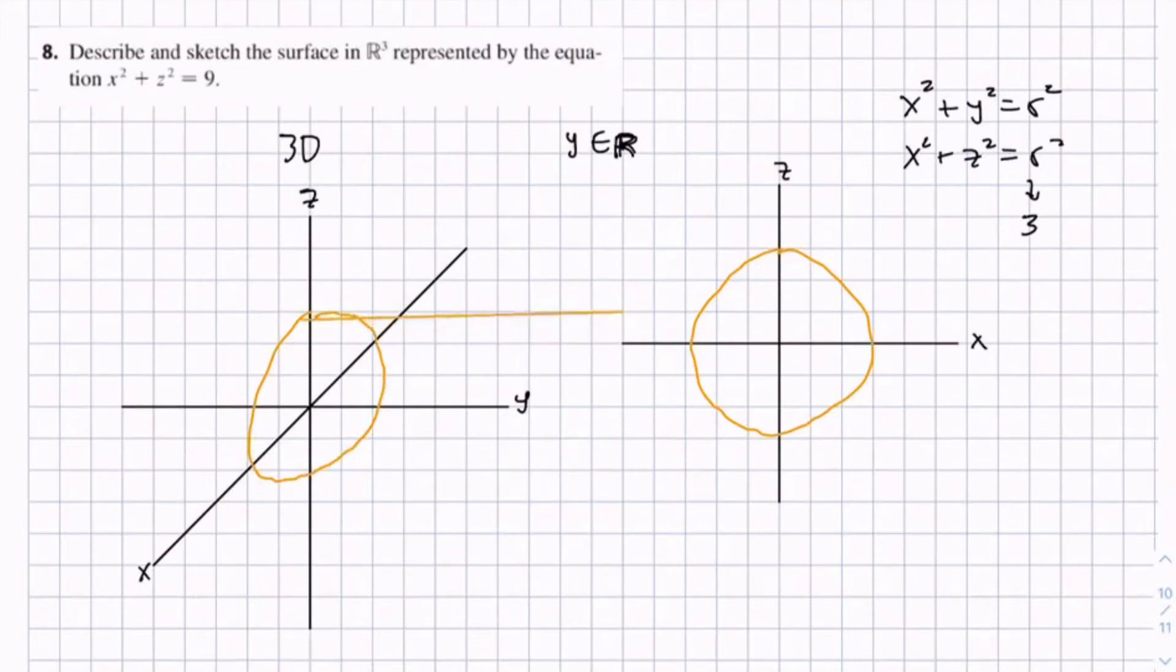Since y is unbounded, it can equal any number. So we have this circle going off in the positive y direction, negative y direction, forever. So it creates this cylinder-like object.